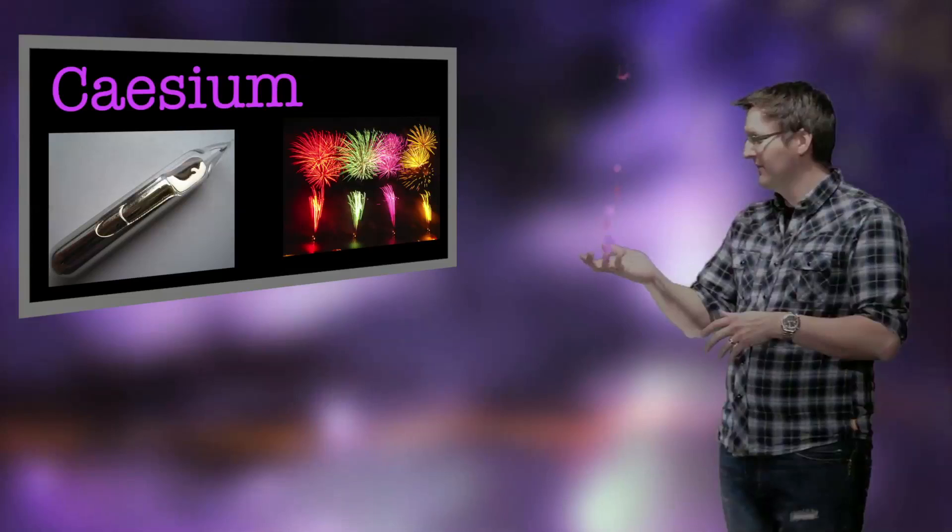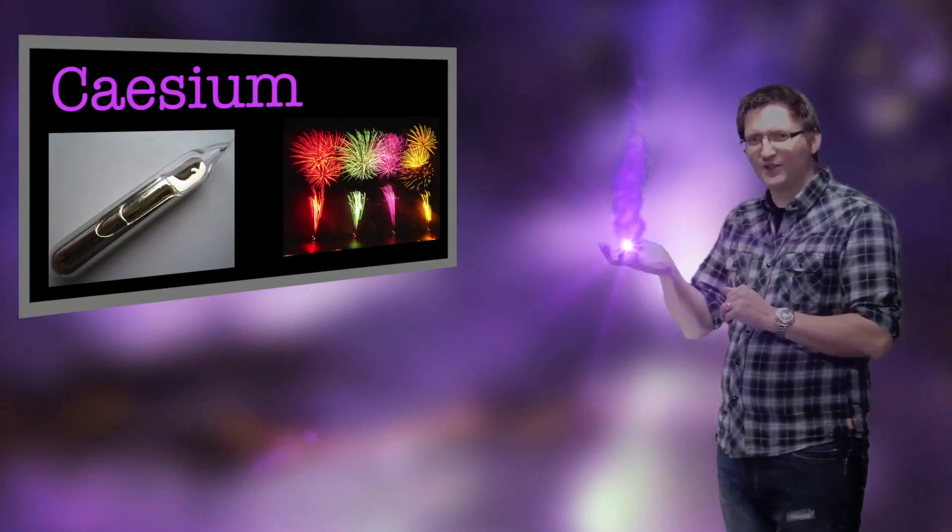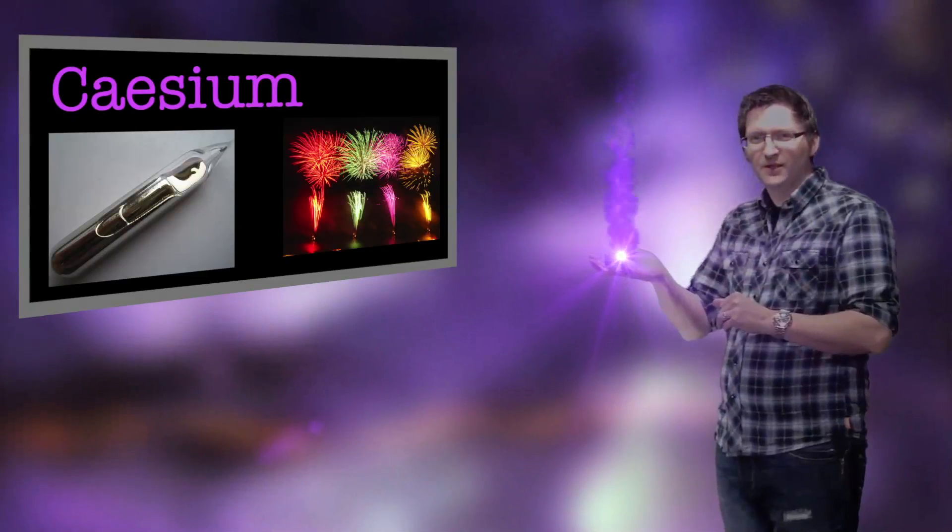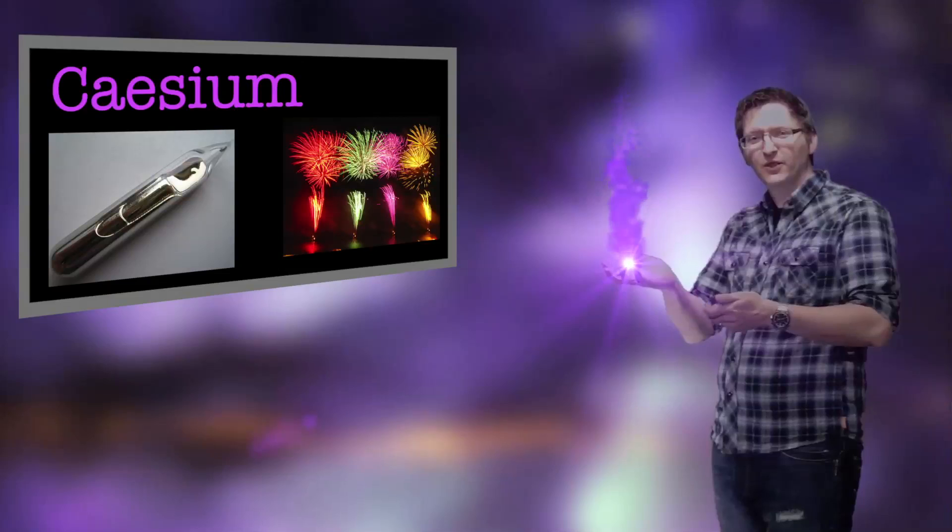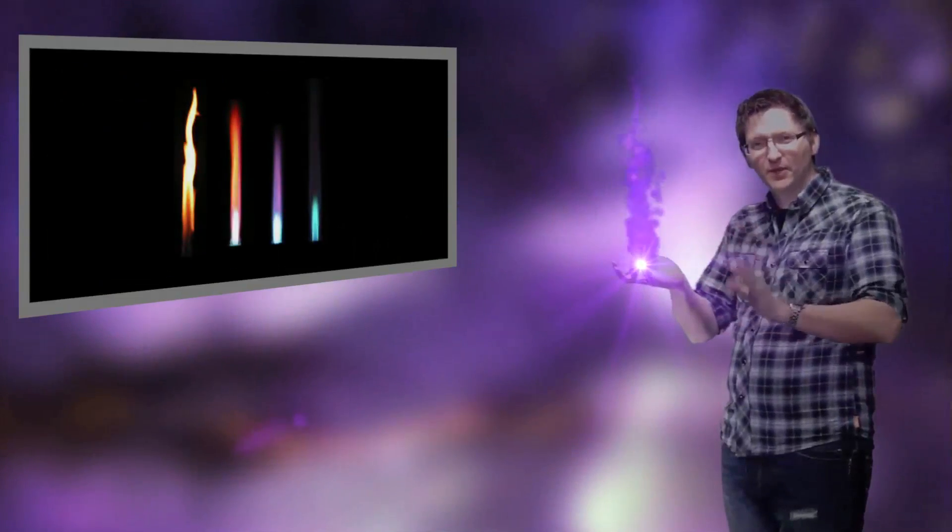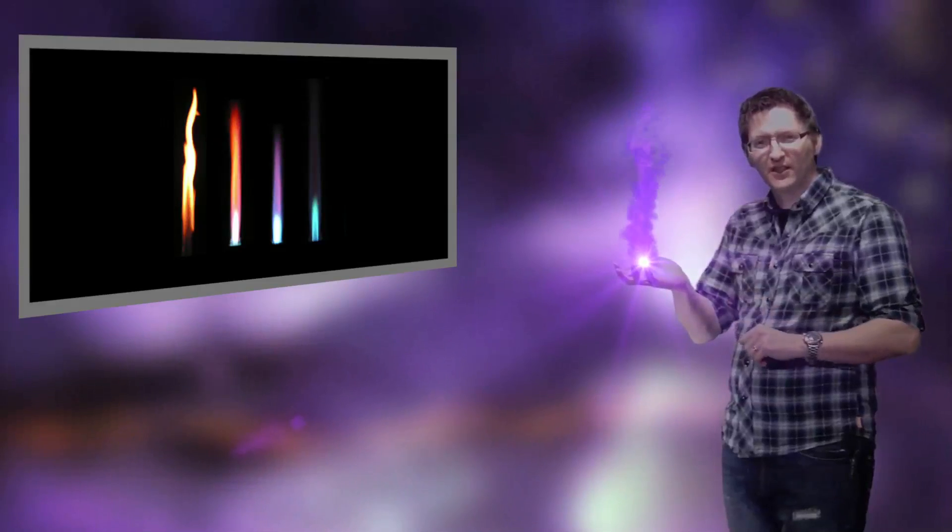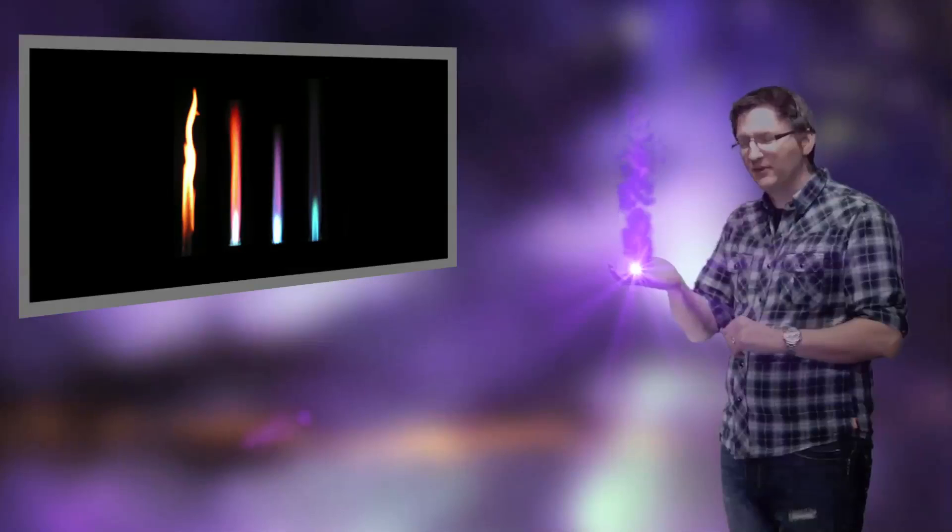Cesium next. Cesium's got a nice bluey violet flame to it. And remember when you do these flame tests you must always make sure your Bunsen burner flame is colorless. Get it on the highest setting so you can't see any of the color from the flame.